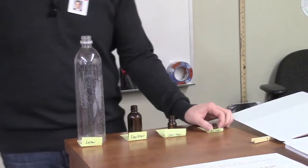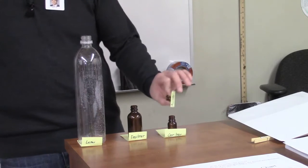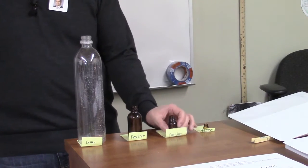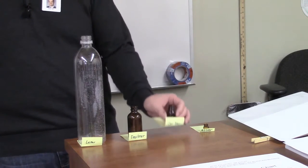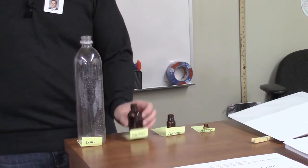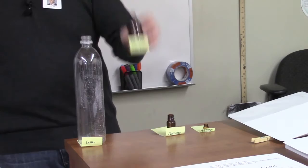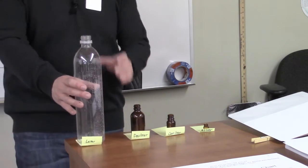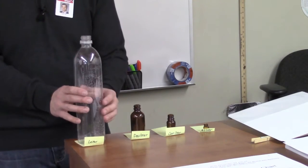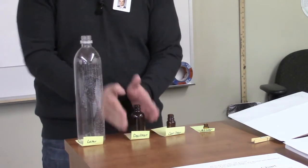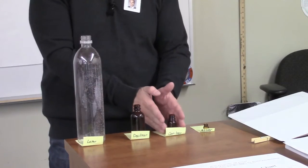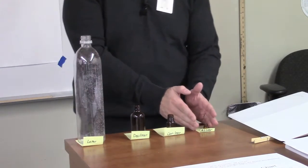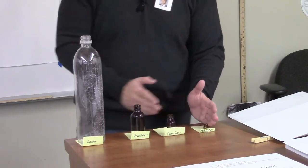So there would be 10 milliliters in a centiliter, 10 centiliters in a deciliter, and 10 deciliters in a liter. If you took 1 liter, you could divide that into 10 deciliters, or 100 centiliters, or 1,000 milliliters.